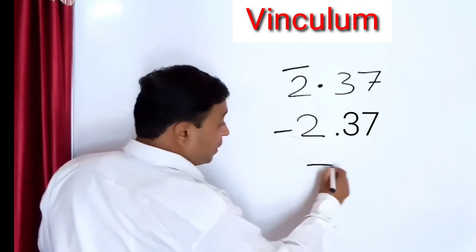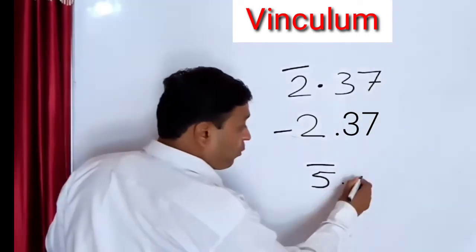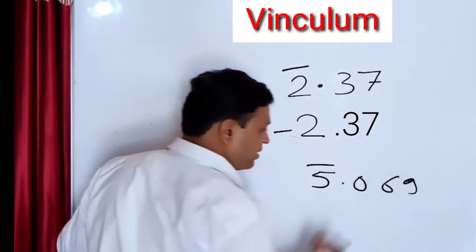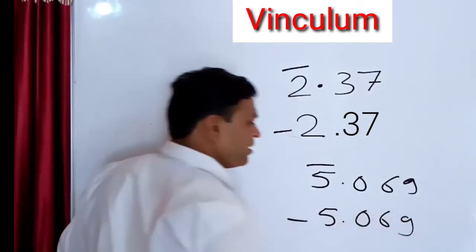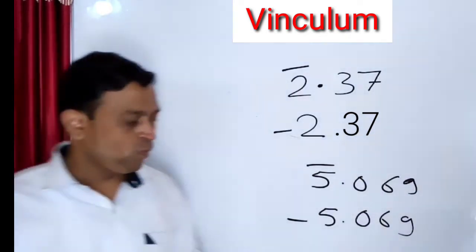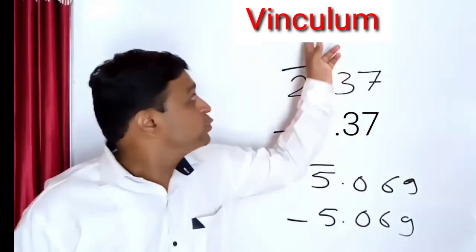For example, we take another example: vinculum on 5.069, and we have to write this number as minus 5.069. This is the use of vinculum sign nowadays.